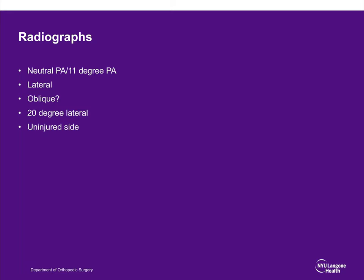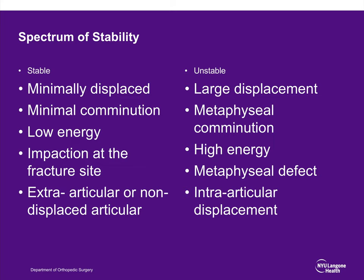What x-rays should you get? A neutral PA or 11-degree PA, always a lateral, and an oblique is useful—though there are no specific parameters, it often provides a better look. A 20-degree lateral helps look into the joint and is useful postoperatively for checking hardware penetration. X-rays of the uninjured side can serve as a template. Stable fractures are minimally displaced with minimal comminution, low energy, impaction rather than distraction, and extra-articular or non-displaced articular. Unstable fractures have large displacement, metaphyseal comminution, high-energy mechanisms, a metaphyseal defect, and intra-articular displacement.